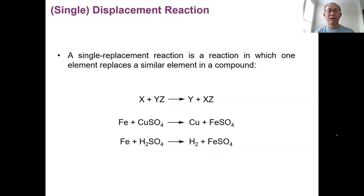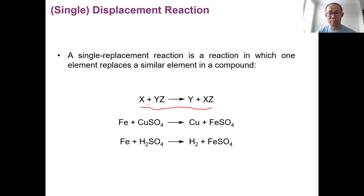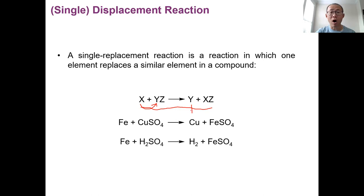The third reaction type is called single replacement or single displacement. That is, an element displaces another element from its compound. It's kind of like X displaces Y out of its compound, so you end up with Y as a free element, and X gets into the compound. X, the element, replaces Y from the compound, so Y becomes a free element — that's why it's called displaced — and then X gets into the compound.